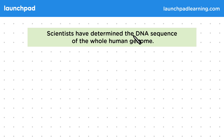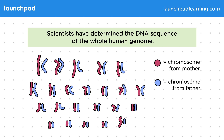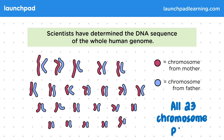Scientists have determined the DNA sequence of the whole human genome. In this diagram you can see all 23 pairs of chromosomes found in the human body. You can see that within the pair, one chromosome is inherited from the mother and the other from the father.